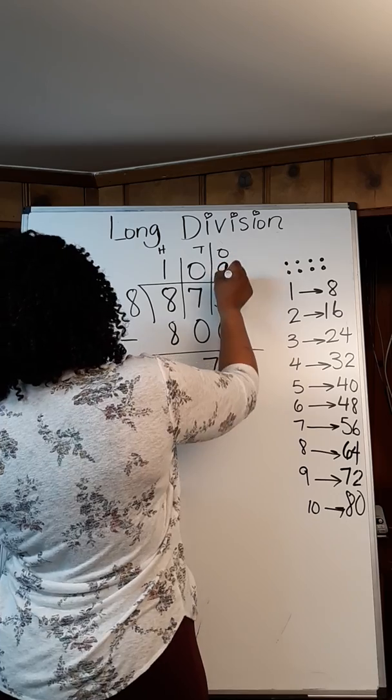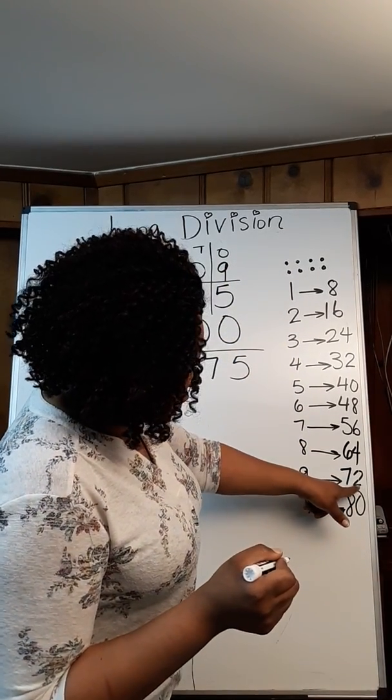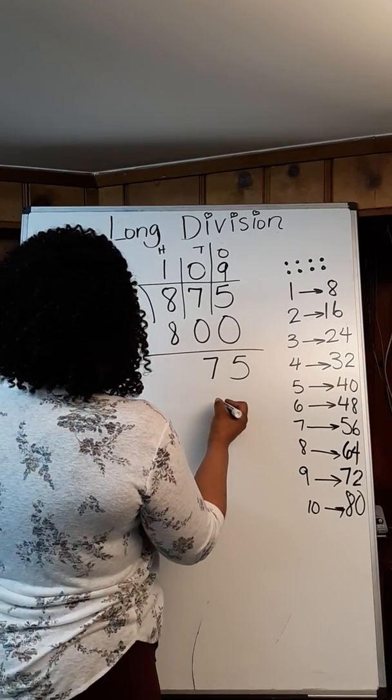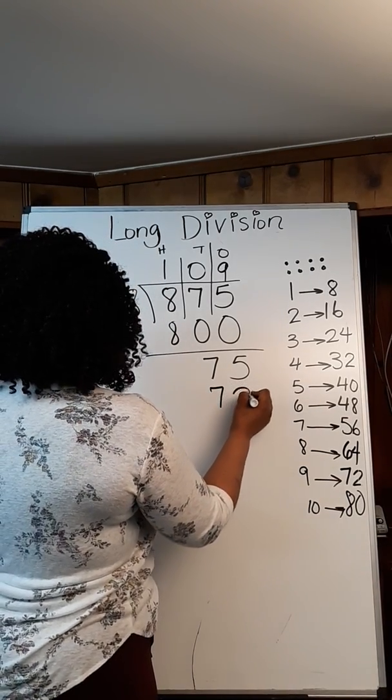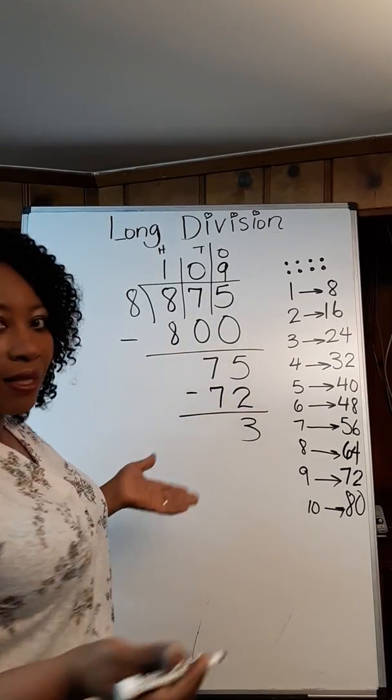So I'm going to put nine right above and nine times eight, as you can see right here, is going to give me 72. I'm going to subtract. I am going to get three as my answer. I'm done.